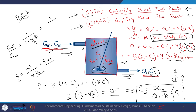So c_out/c_in equals 1/(1 + kθ). Please note this is the case for CSTR at steady state, with no rate of formation and first-order rate of loss. For different conditions you would obviously arrive at a different equation.